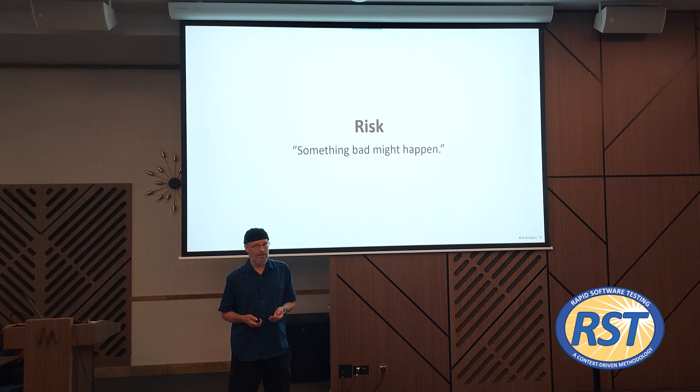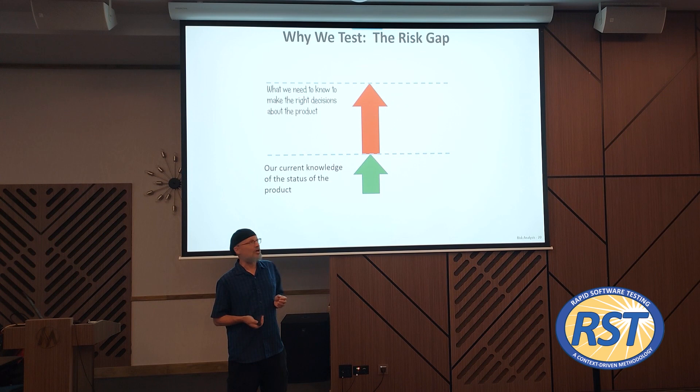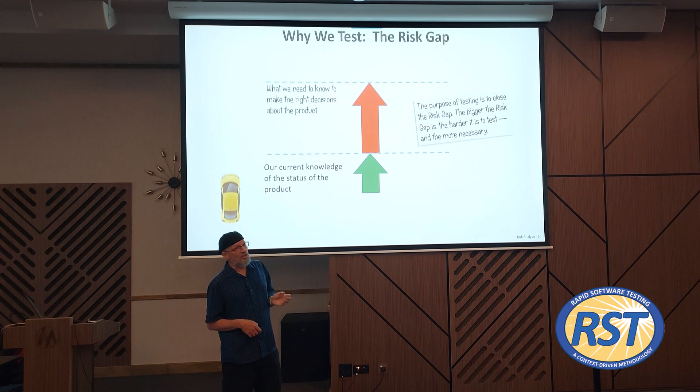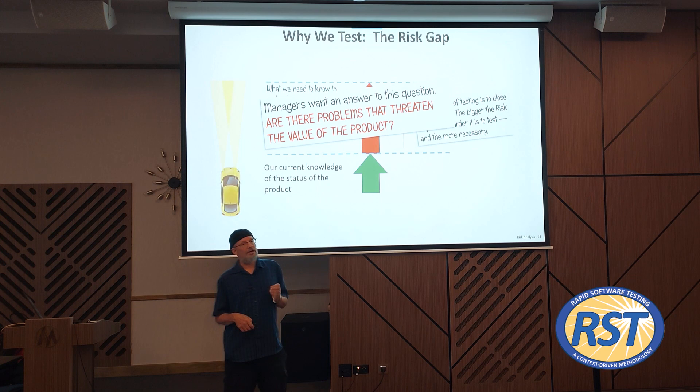Risk — what's it all about? Risk is a possibility of something bad happening. Why do we test? We test to close the risk gap — the gap between what we know about the status of the product and what we need to know in order to make an informed shipping decision. The purpose of testing is to close that gap, and the bigger that gap is, the harder it is to test and the more necessary.